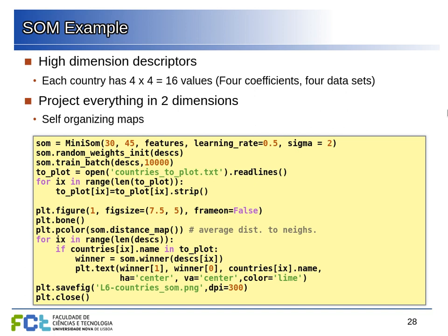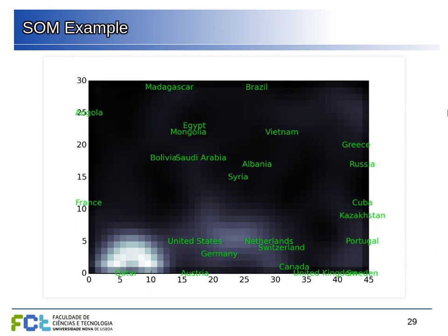The result shows Qatar as a very distinct outlier — a very rich country with unusual development profile due to being small with lots of oil resources, and its neurons are very stretched out. Then you have Austria, United States, Germany, United Kingdom, and Portugal clustered together. Further along you have Kazakhstan, Cuba, Russia, and Greece, and at the other end Madagascar and others. Countries with different development profiles are spread out differently in this two-dimensional map.